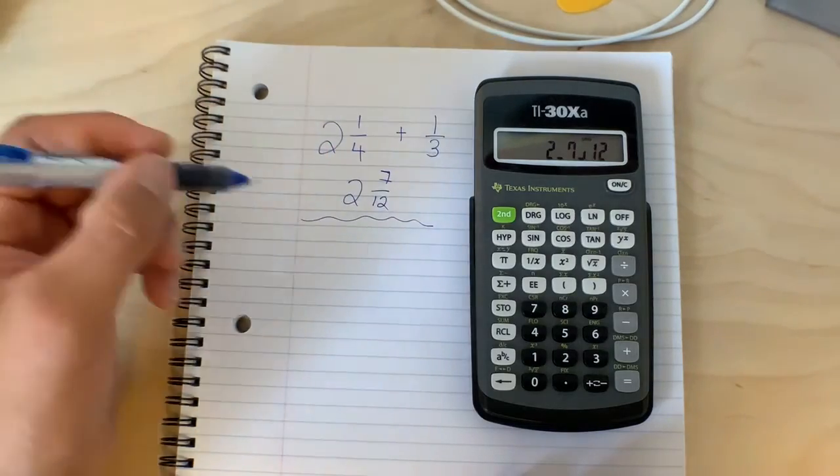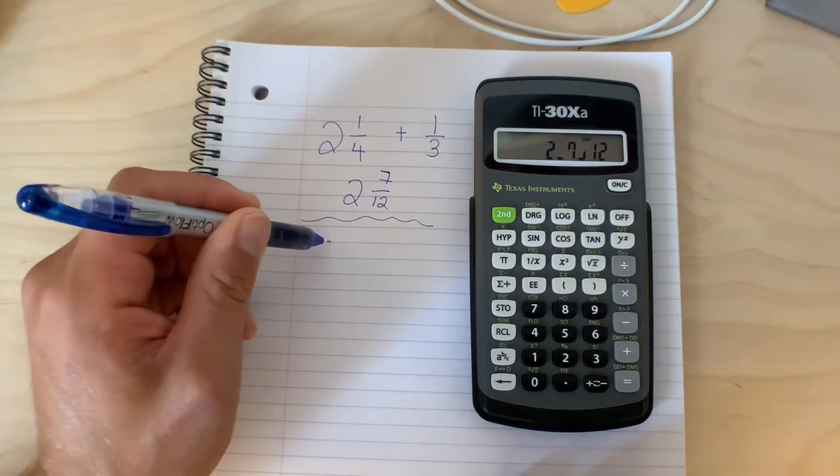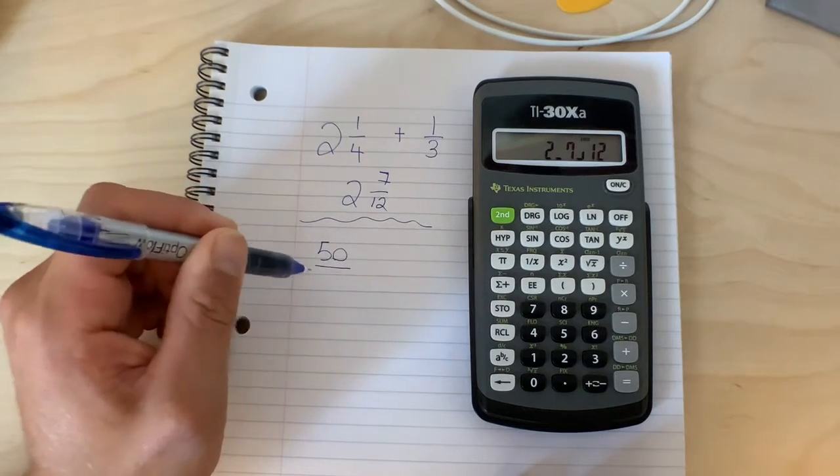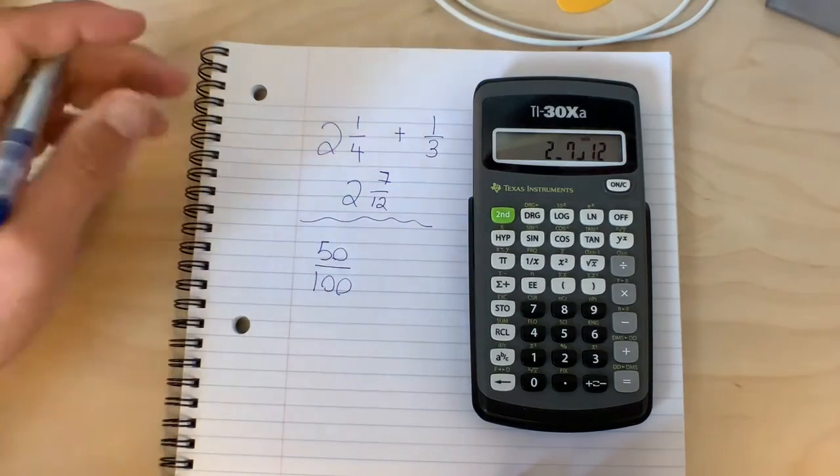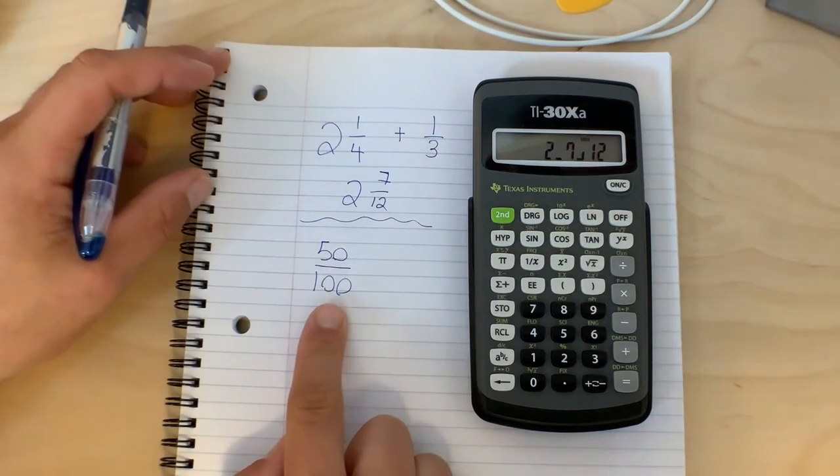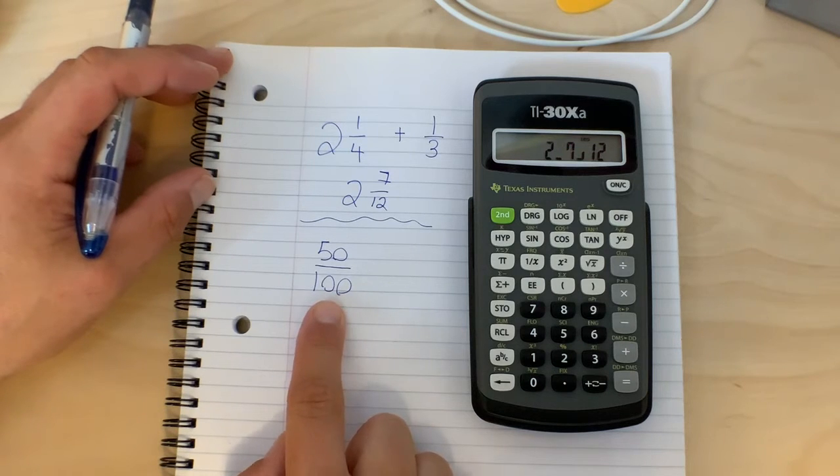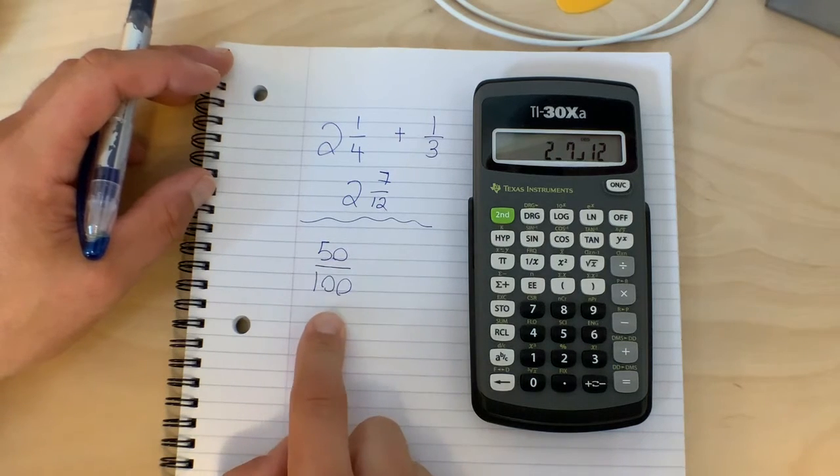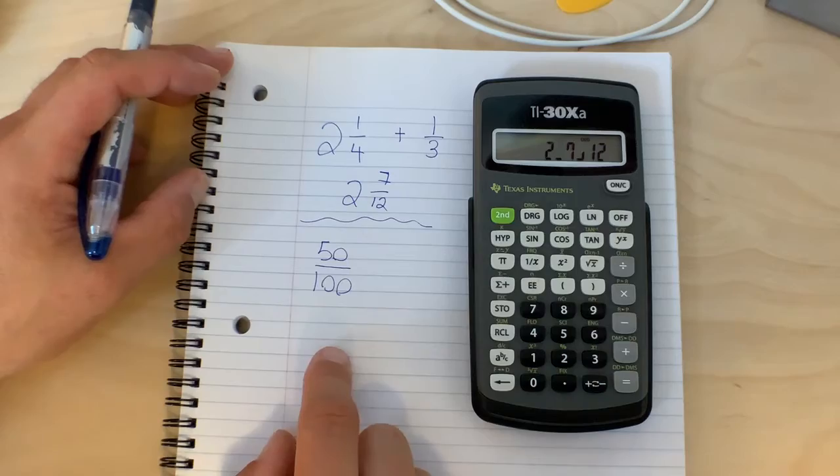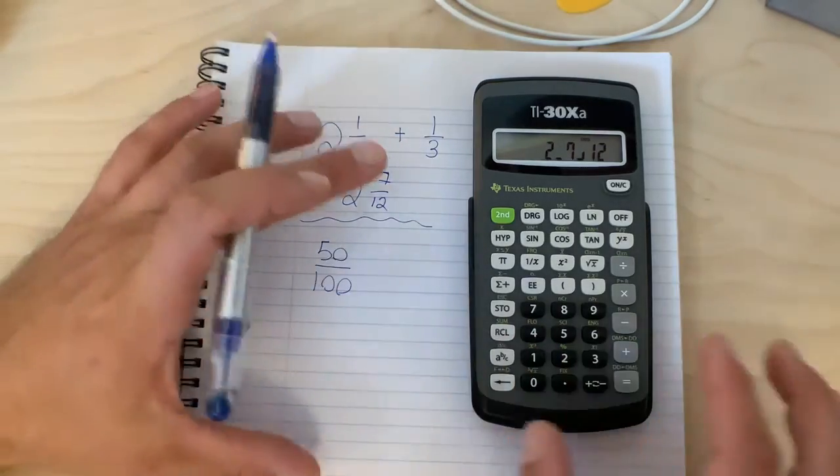The other thing it can do is reduce numbers. So let's say you had something like 50 over 100. Instead of doing the manual steps to reduce these two numbers, you could divide them both by 10 or divide them both by 50 and start to chip away and reduce them, reduce them, reduce them.